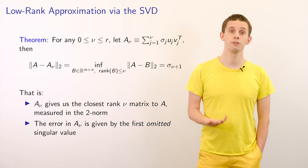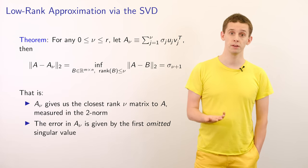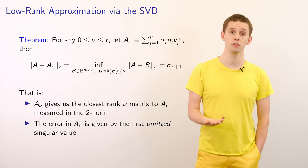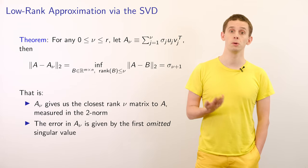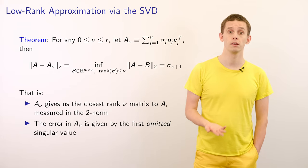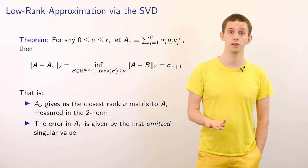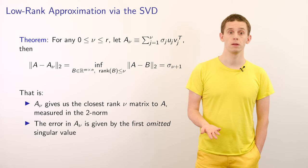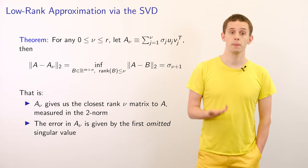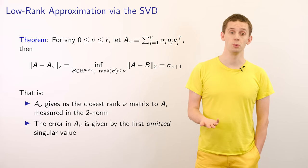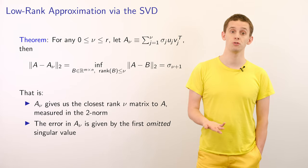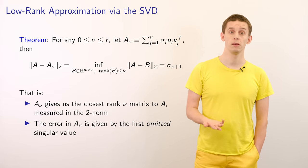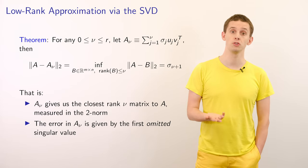And furthermore, the value of that induced Euclidean 2 norm difference will be equal to sigma nu plus 1, i.e. the first singular value in the sum that we neglected. So in other words, A subscript nu gives us the closest rank nu matrix to A measured in terms of this induced Euclidean norm.